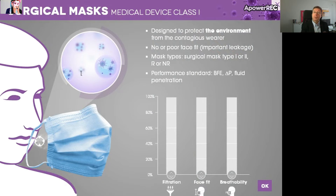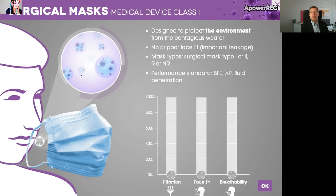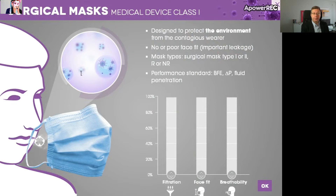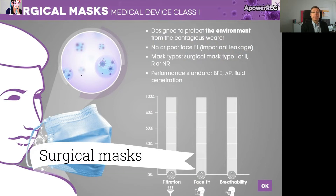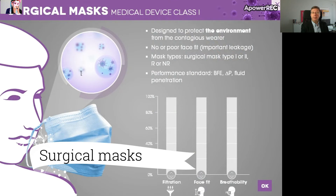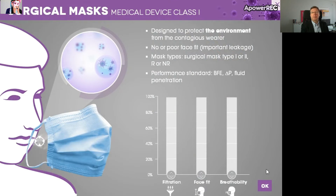Surgical masks can also have splash resistance, which is an additional requirement in the medical device standard. It has to demonstrate that in case body fluids are splashed from a patient onto the mask, they will stay there and not go on the face, skin, or inside the mouth and nose of the wearer. As a result, surgical masks have very good breathability, but they have very bad filtration and very bad face fit. This is not the right product for you.